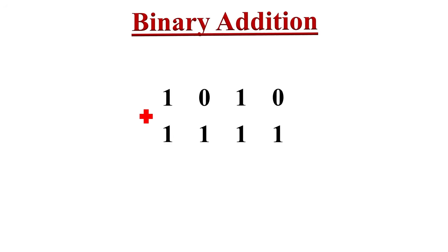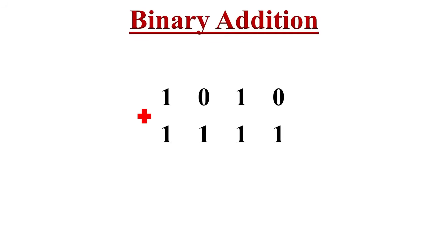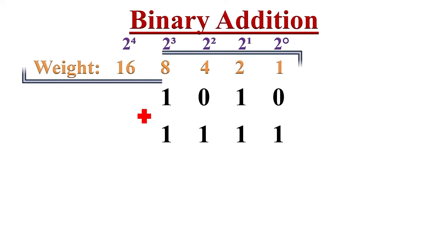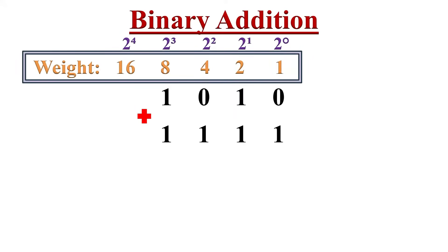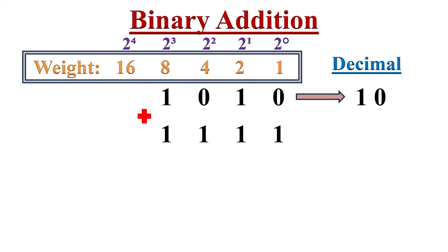Let's see how to do binary addition. Each and every binary digit has some weight by the power of 2, starting from right to left — like 2 to the power of 0, 2 to the power of 1, and so on. Here the decimal equivalent of the first binary number is 10 and the second one is 15.